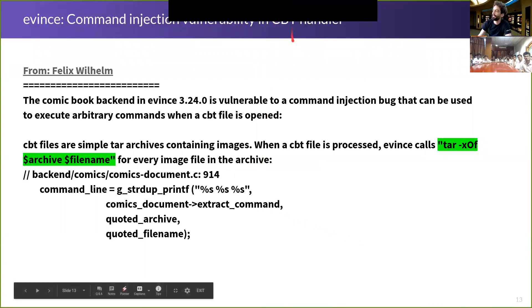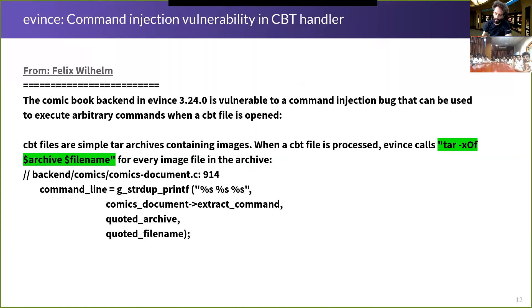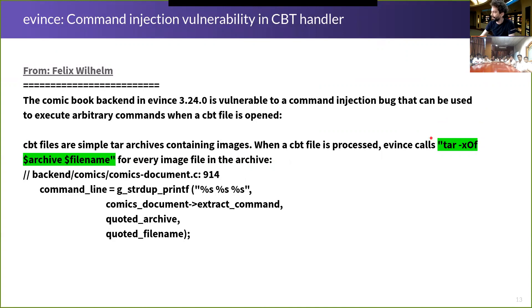One example is an argument injection vulnerability in the CBT handler, which is a comic book handler back-end of Evince, a popular PDF and document viewer on Linux. Felix William, who I believe is now at Google Project Zero, found this issue — you can click the link in the slides to see the original advisory. A CBT comic book file is basically a tar file containing images, which are extracted from the tar file. There are two potential command argument injection points: dollar-archive and dollar-panem, meaning you could name the containing CBT file or the inner files within the tar file in a special pattern.